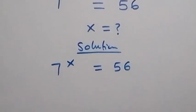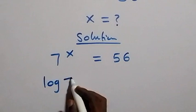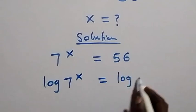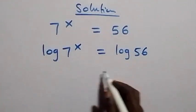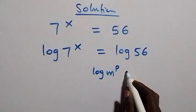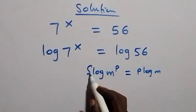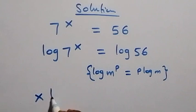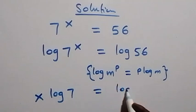Let's take the log on both sides. Here we have log of seven raised to the power x equals log 56. Then we apply the power log rule: log m raised to power p can be written as p·log m. Here x is the power, so we have x·log 7 equals log 56.